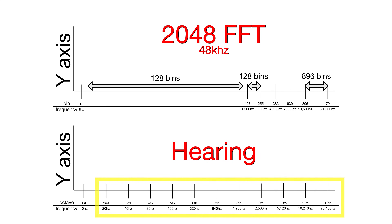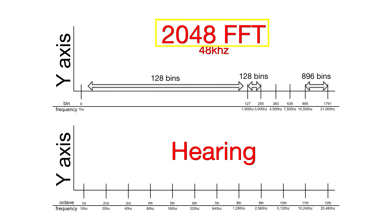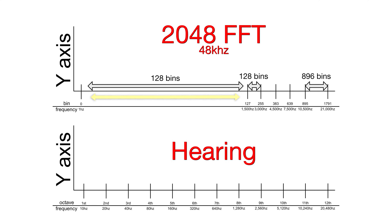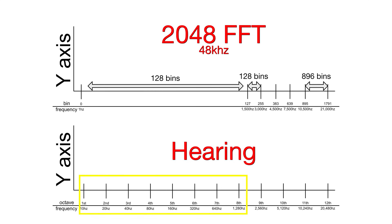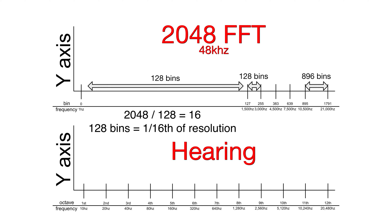In only 11 octaves, we will have exceeded the range of human hearing. But what about our discrete Fourier transform analysis? How does that work? Unfortunately, it splits everything equally. If we have a 2048 sample window at a 48,000 hertz sample rate, our first 128 bins go from 0 to 1,500 hertz. That's over 8 octaves — 75% of our hearing is represented by just 6% of the FFT's data. That's not good.